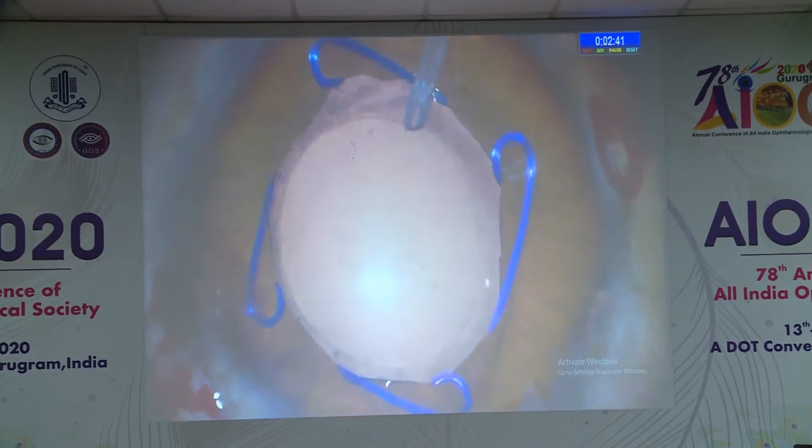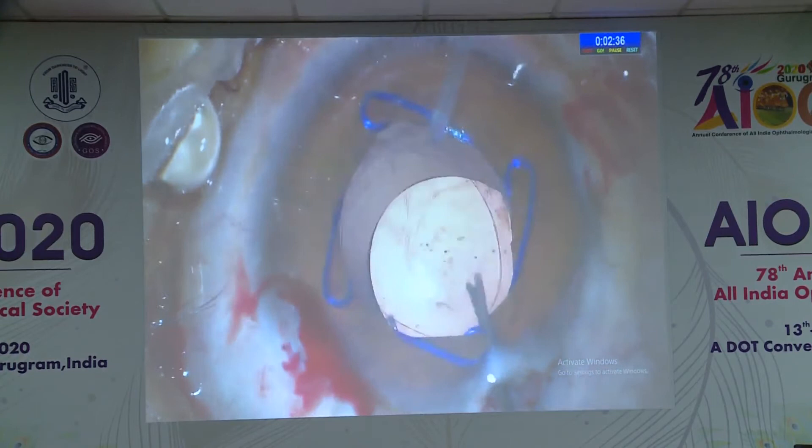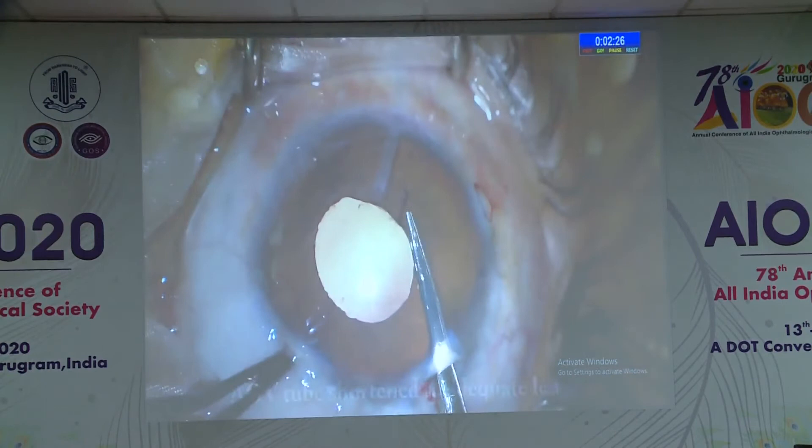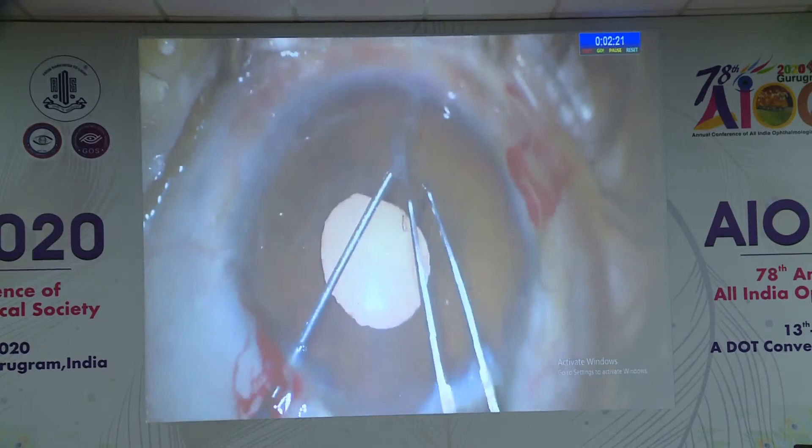Removal of the cortex was done, then implantation of the IOL, followed by removal of the Malusine ring. The tube was also trimmed because it was too long.